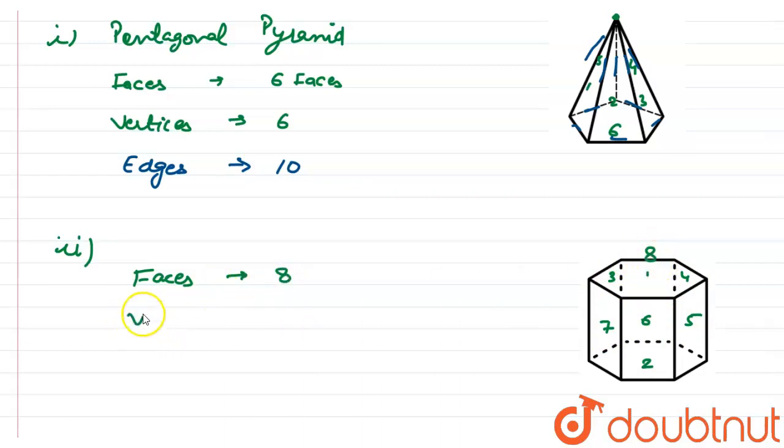Now we have to find out vertices. Vertices are very easy to find out. We have to find out the points - one, two, three, four, five, six, because top and bottom is hexagonal. So six top and six bottom means 12 vertices.